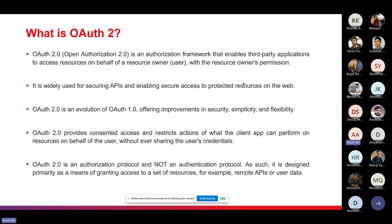Now, what is OAuth2? OAuth2, which stands for Open Authorization, is an authorization framework that enables third-party applications to access resources on behalf of a resource owner or user, with the resource owner's permission. It is widely used for securing APIs and enabling secure access to protected resources on the web. OAuth2 is an evolution of OAuth1, offering improvements in security, simplicity, and flexibility.